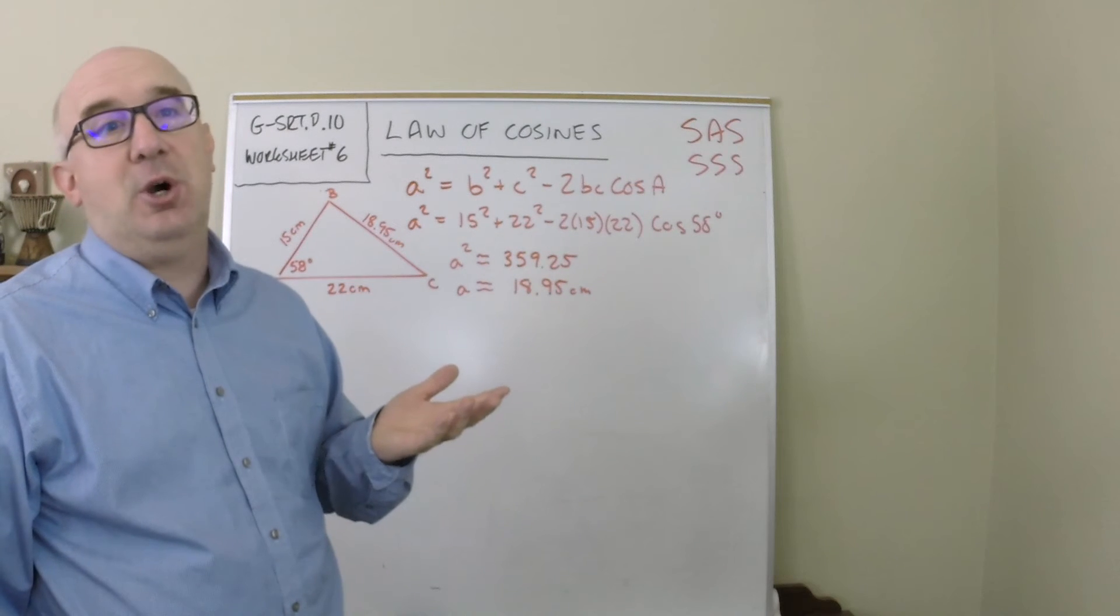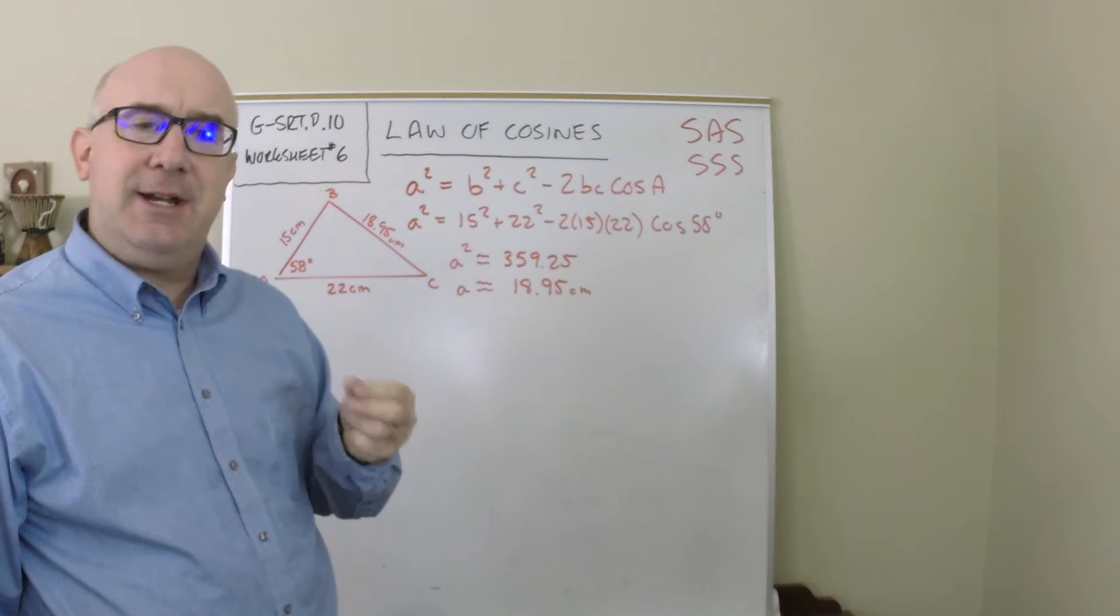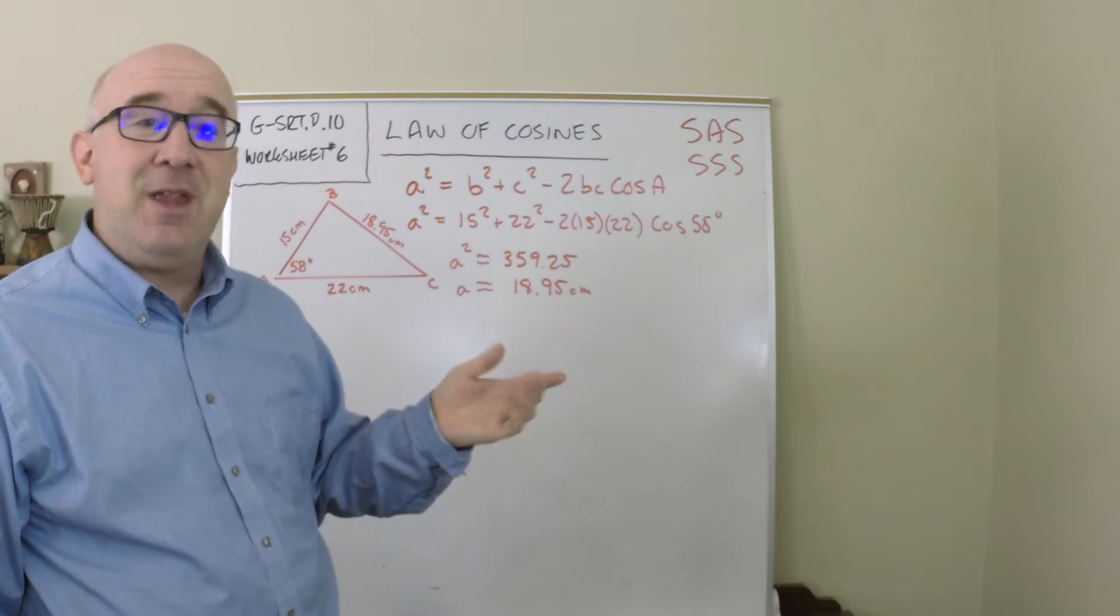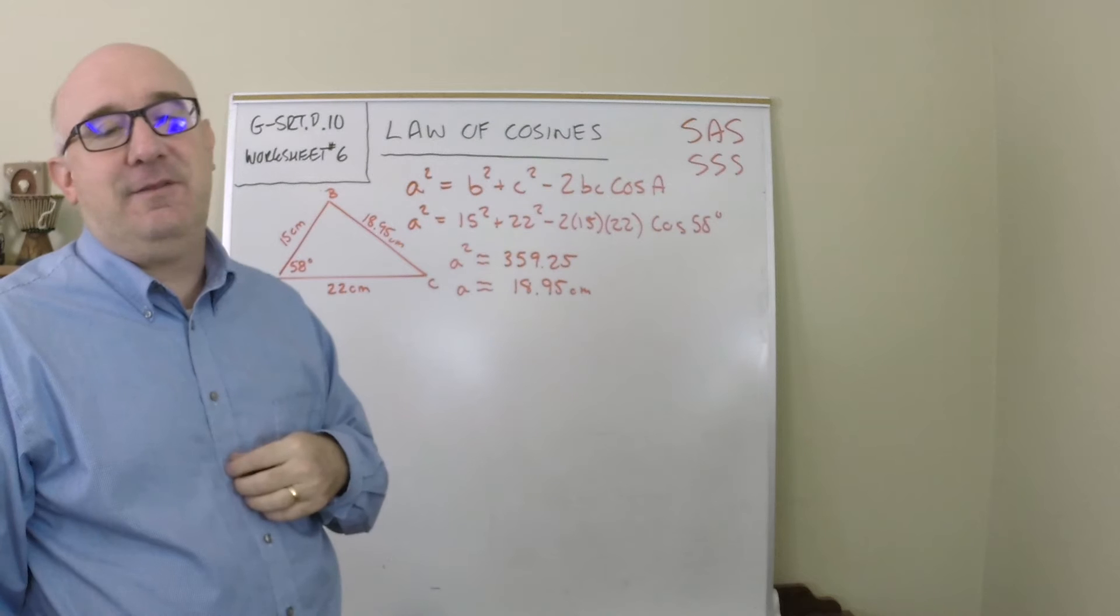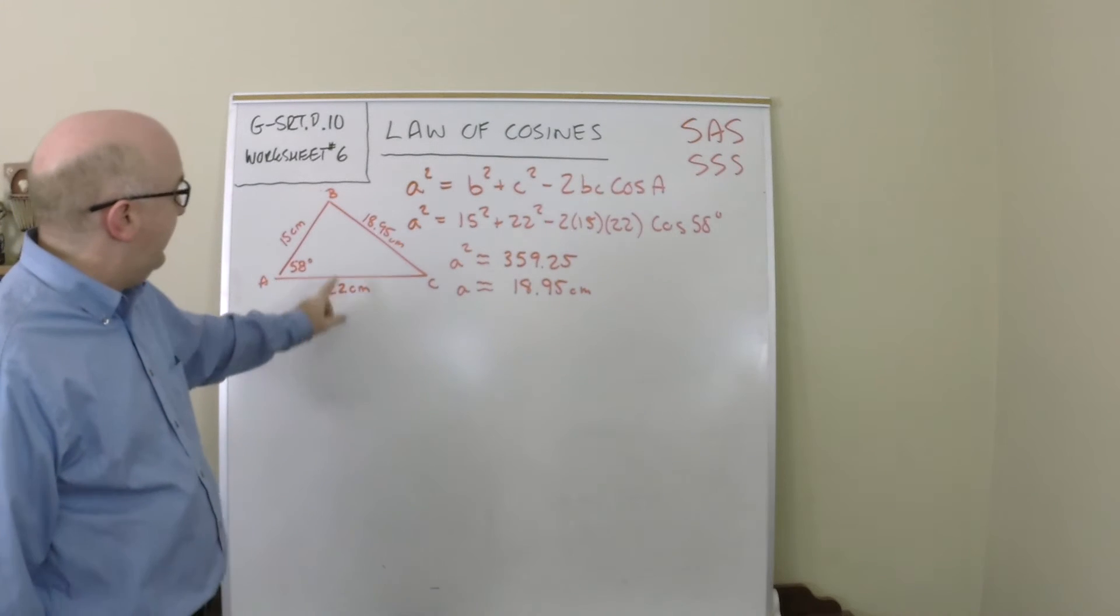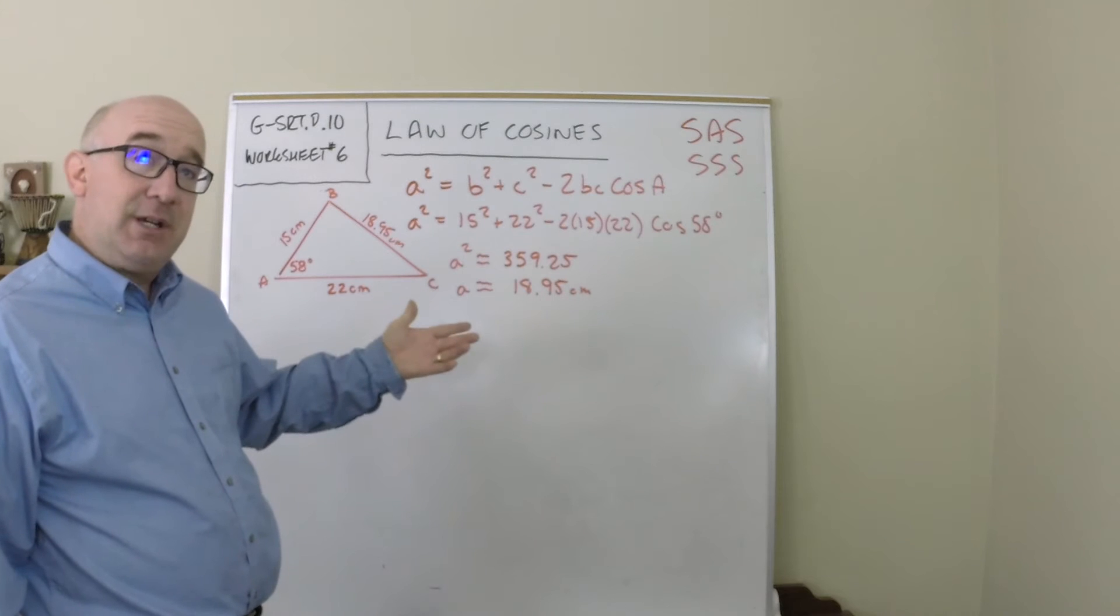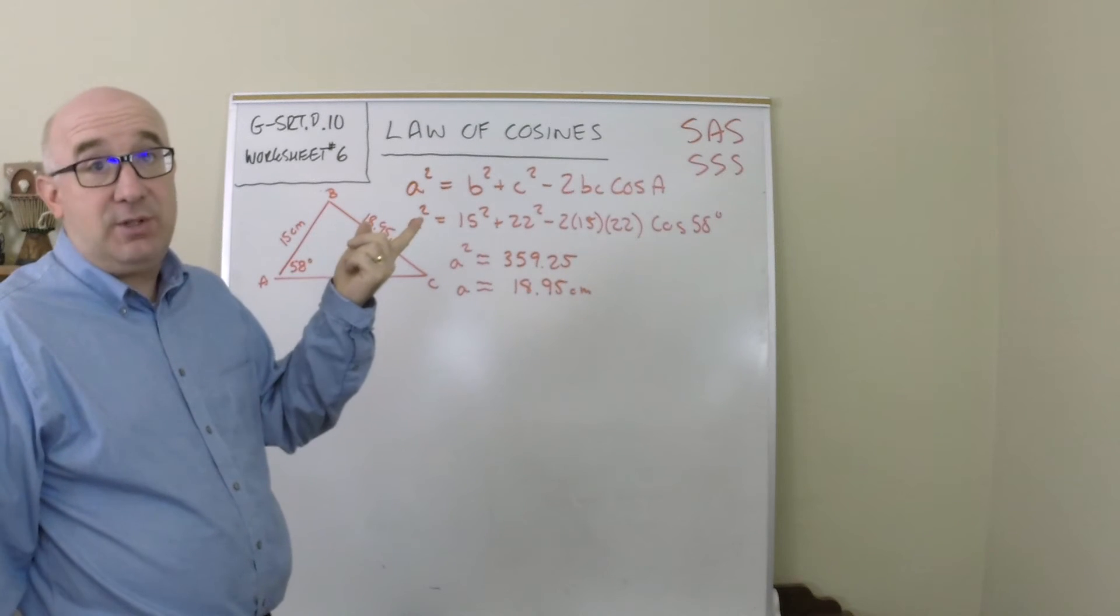If I had a ratio, am I in quadrant 1 looking at an acute angle or am I in quadrant 2 looking at an obtuse angle? The way you avoid any confusion, always solve for the next smallest angle because it has to be acute. You can only have one obtuse if you have it.